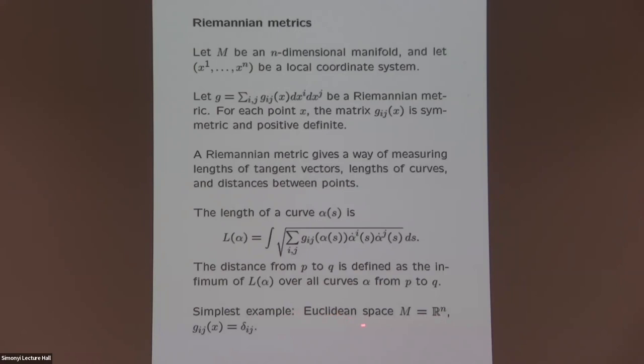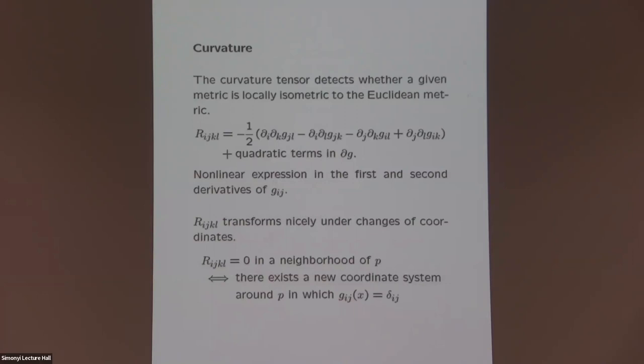The simplest case is Euclidean space, where g_ij is constant and equals δ_ij. Once we know how to compute lengths of curves, we can also calculate distances between points by minimizing the length among all curves joining two points.